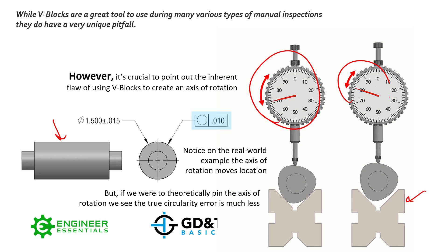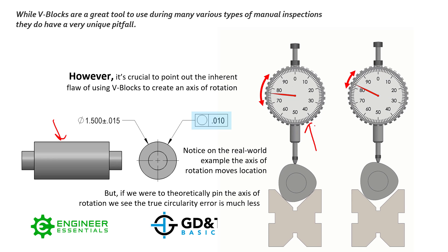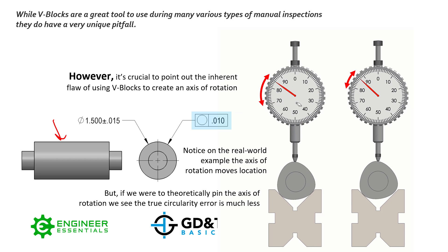You'll notice that the indicated value in the real world is about twice as much as the theoretical actual amount of error occurring. You might say that's good — it's conservative. If the value you're getting off your indicator in a v-block is, say, 10 thousandths, you know the actual error is probably about half that, so you definitely pass your tolerance. But be careful, because it's not always less than the actual error.